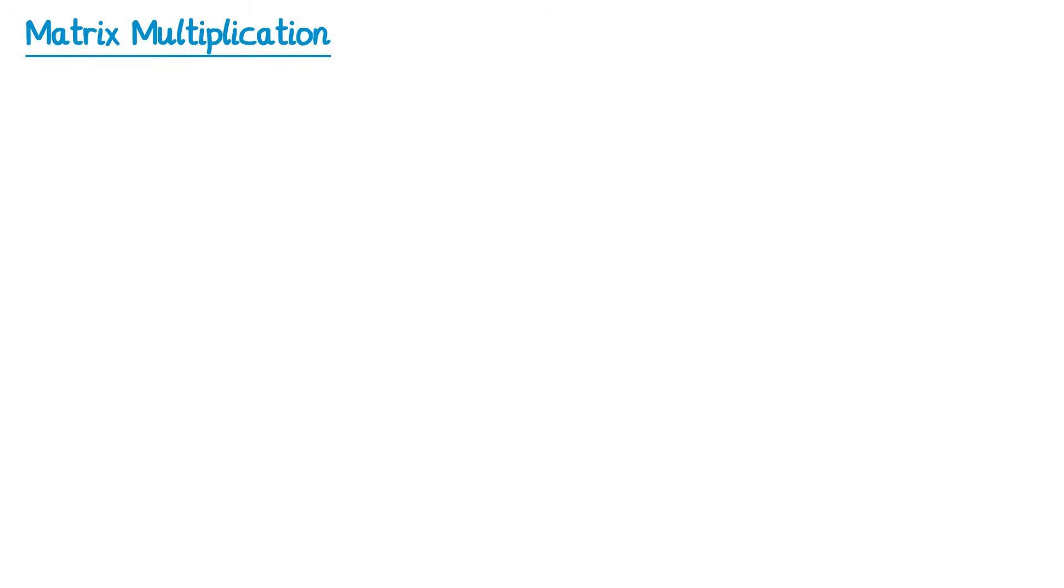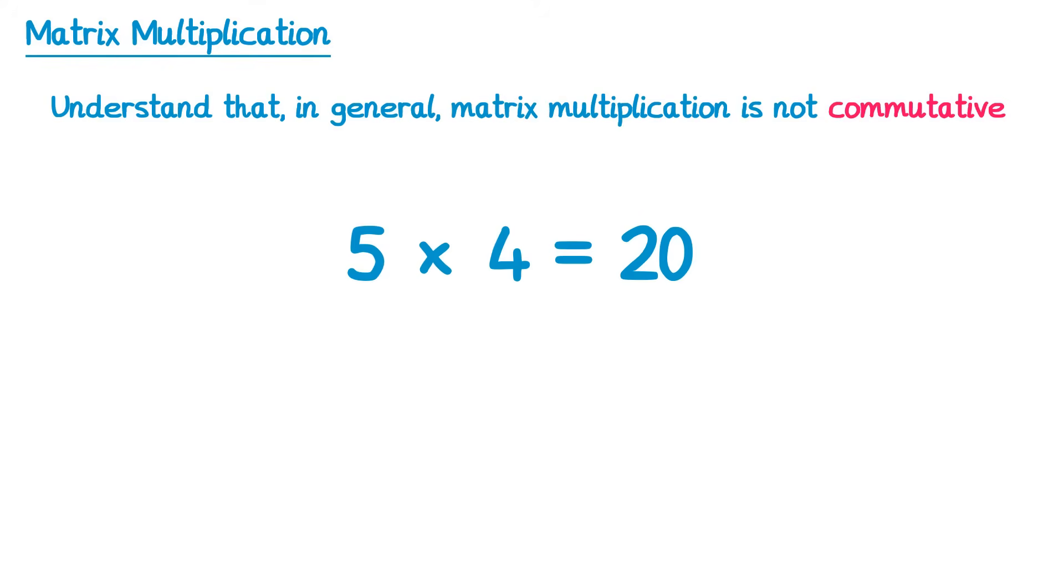The next thing you need to understand is that in general, matrix multiplication is not commutative. The word commutative concerns the order in which you multiply. So if we take regular multiplication, like 5 times 4, which equals 20, this is commutative because you can change the order, like 4 times 5, and get the same result. Unfortunately, this doesn't apply to matrices, and I'll show you why now.